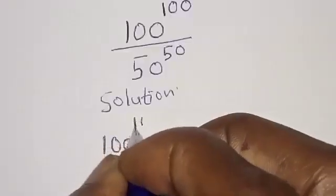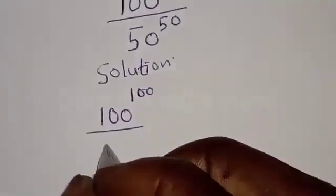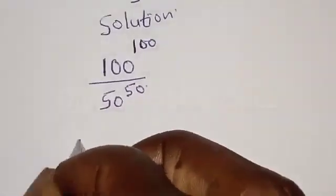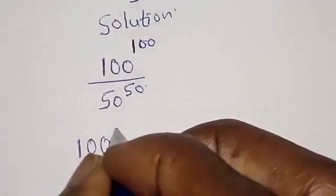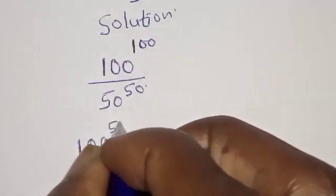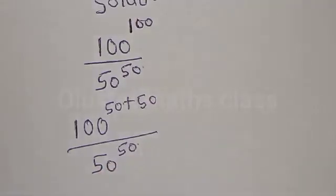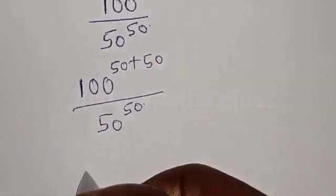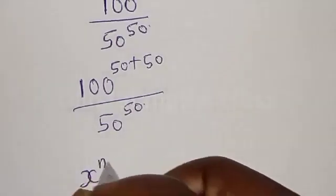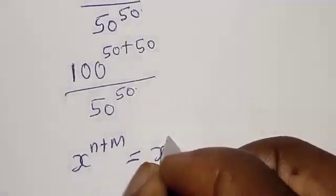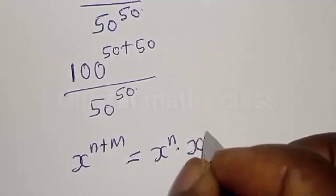Solution. We have 100 raised to power 100 over 50 raised to power 50. This can be expressed as 100 raised to power 50 plus 50 over 50 raised to power 50. Recall that if you have s raised to power n plus m, that is the same thing as s raised to power n multiplied by s raised to power m.